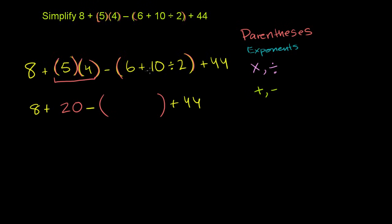Well, you might be tempted to say, let me just go left to right. 6 plus 10 is 16 and then divide by 2, and you would get 8. But remember, order of operations, division takes priority over addition. So you actually want to do the division first.